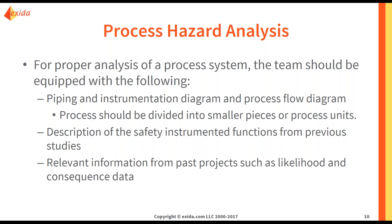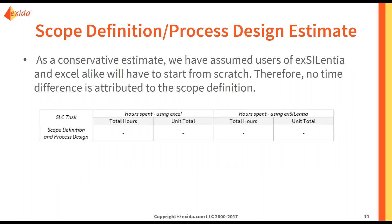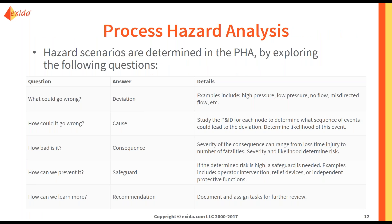Starting with the process hazard analysis: for proper analysis you need the piping and instrumentation diagram or process flow diagram, a division of the process into smaller units, descriptions of safety instrumented functions from previous studies, and relevant information from past projects such as likelihood and consequence data. As a conservative estimate, we assumed users of ExSILentia and Excel alike will have to start from scratch, so we attributed no time difference to this preparation task.